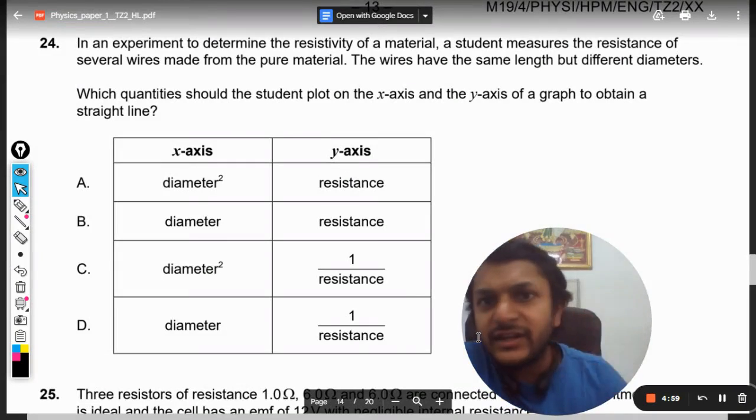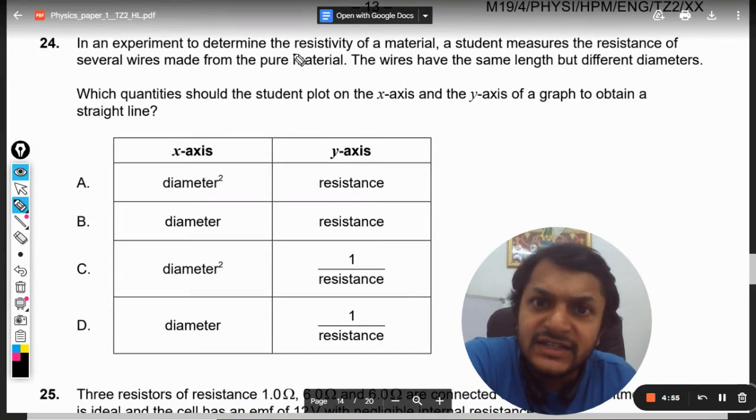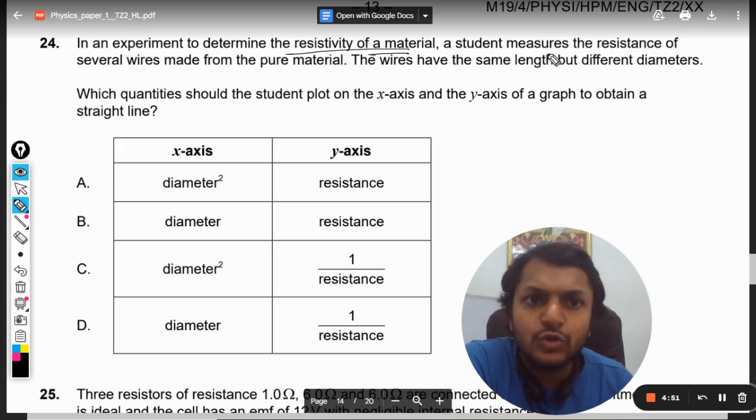In an experiment to determine the resistivity of a material, a student measures the resistance of several wires made from the pure material. The wires have the same length but different diameters.